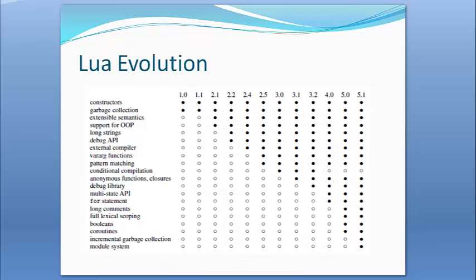The next screen shows Lua's evolution over time, starting with version 1.0 in 1993 and moving up through the last couple of years to 5.1 and now 5.2, the current version. You can see how it has added quite a few significant features consistently over nearly 20 years. Object-oriented programming was supported early on, while full lexical scoping didn't come about until around version 5. Booleans and garbage collection, which are pretty significant, were also added to Lua relatively recently.